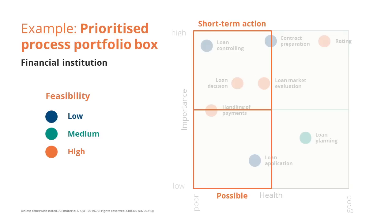The bottom right quadrant requires us to inquire whether the processes there are of strategic fit to the company — whether or not we need to decommission these processes. This quadrant contains processes that have good health yet relatively little importance in the organisation.